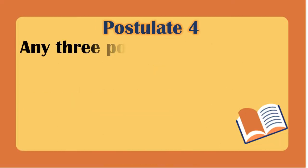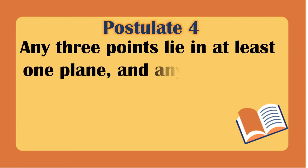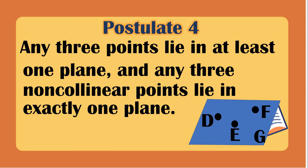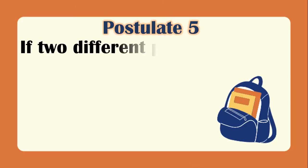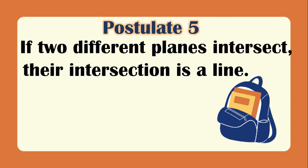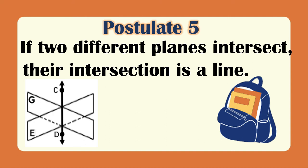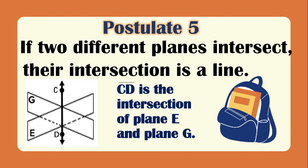For example, non-collinear points D, E, and F lie on the same plane G. Postulate 5: if two different planes intersect, their intersection is a line — plane G and plane E intersect at line CD. Postulate 6, the angle measurement postulate: the measure of an angle is a real number between 0° and 180°.